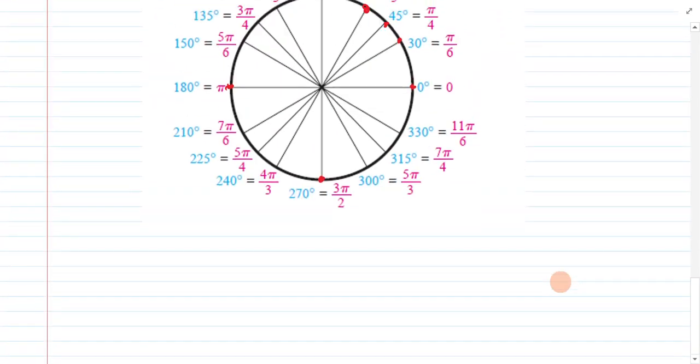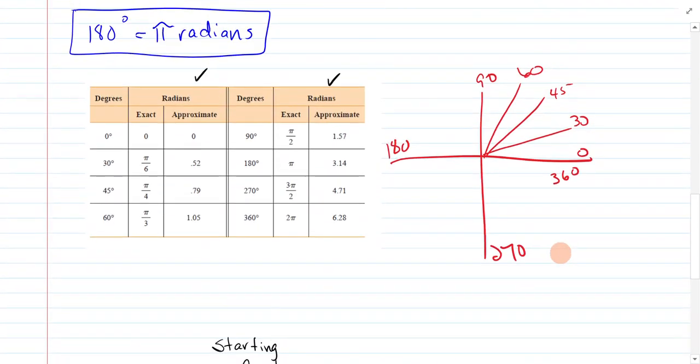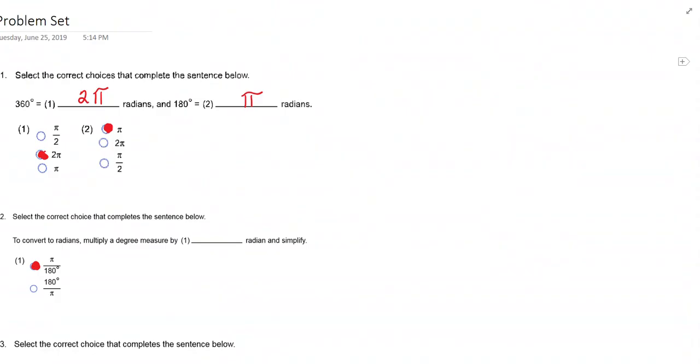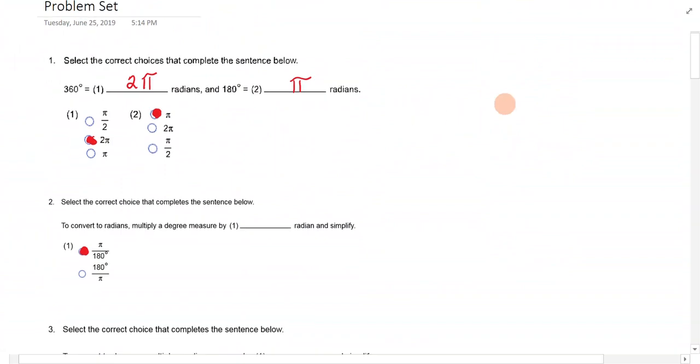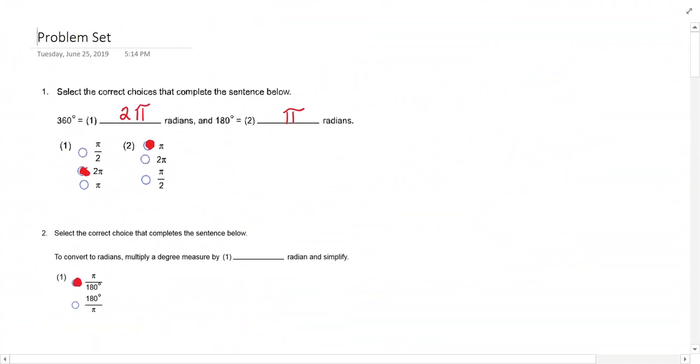I think that's it for the lecture notes right now. We're just getting started. So let's go look at our problem set. 360 equals how many radians. We just looked at that chart. It's 2 pi. And 180 degrees equals pi radians. So there's the two answers for that. Remember you're talking about multiplying by pi over 180.